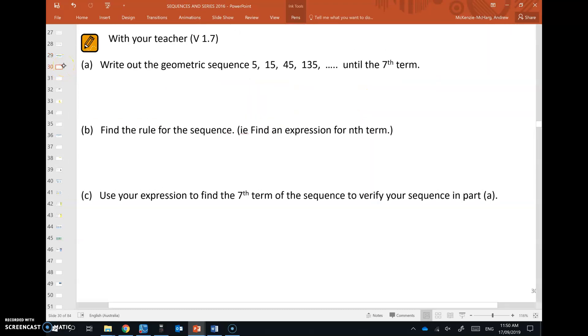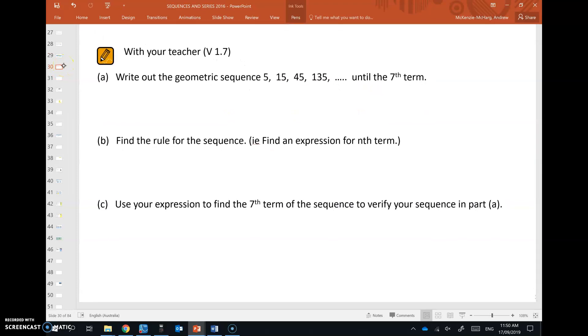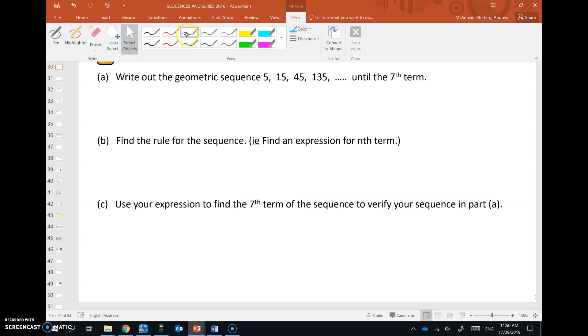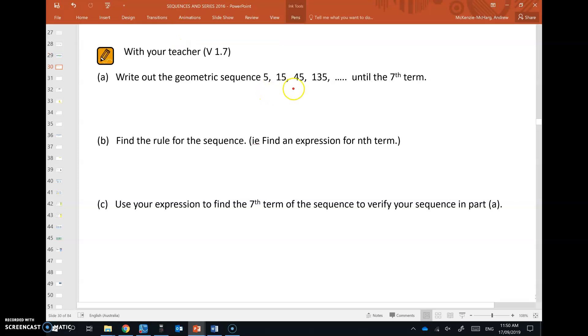So what do you multiply by to get from one term to the next? Let's look at the example here. We have this geometric sequence and they want us to write this out to the seventh term. So if you're unsure about what each term is being multiplied to get to the next one you can do that little division that we did before. So you might be able to see here what the common ratio is and you might want to pause the video and write out to the seventh term yourself.